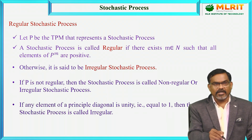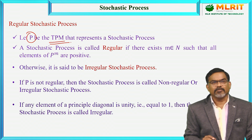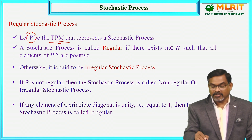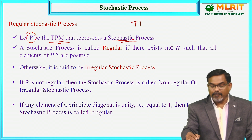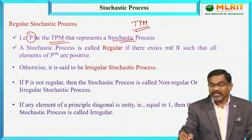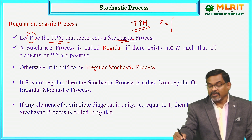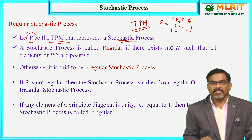Coming to a Regular Stochastic Process, let P be the Transition Probability Matrix which represents a stochastic process. In the last session, we discussed about this TPM, the Transition Probability Matrix. The matrix is formed by the transition probabilities P11, P12, P13, P21, and so on. This is called the Transition Probability Matrix.